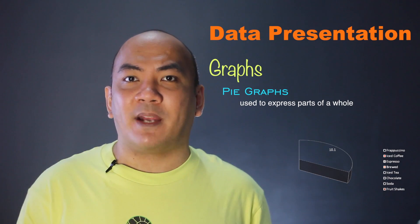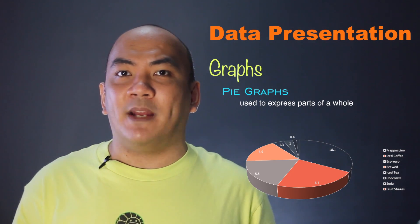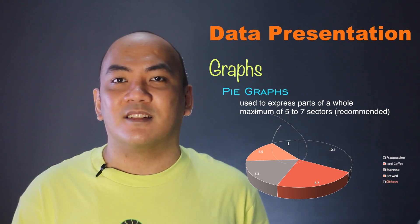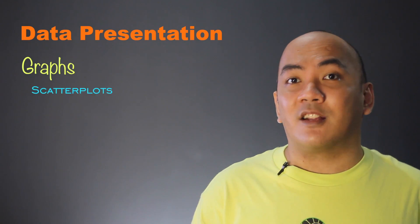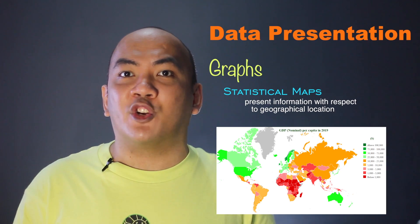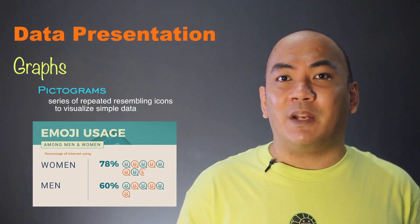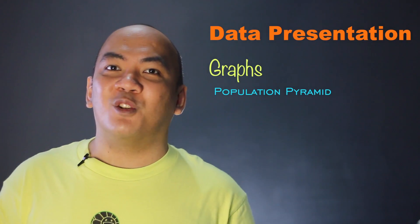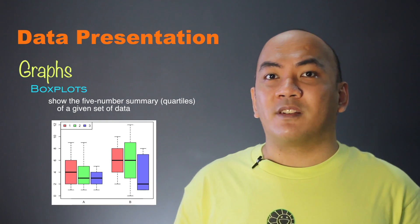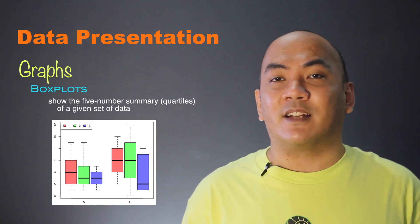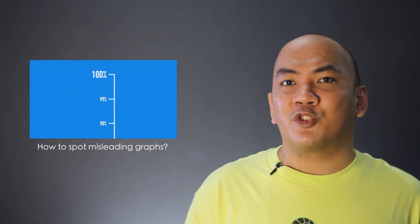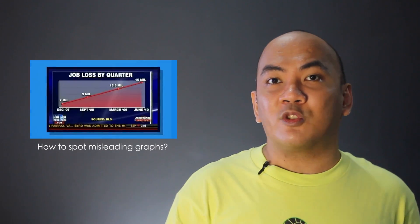We have pie graphs, which are used to express parts of a whole. Remember that there are sources which recommend a maximum of 5 to 7 sectors only; more than that, you may use 'others' for categories with relatively low counts or percentages. Other graphs to consider include: the scatter plot, which is used to describe the relationship of two quantitative variables; statistical maps, which present information with respect to geographical location; pictograms, which are series of repeated resembling icons to visualize simple data; the population pyramid, also known as the age-gender pyramid, which shows the distribution of different age groups in a population according to gender; box plots, which show the five-number summary called quartiles in a given set of data; and violin plots, which are similar to box plots with the addition of putting densities on each side. Just take extra precautions in creating graphs.